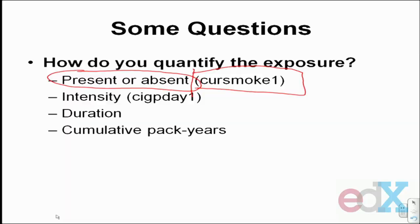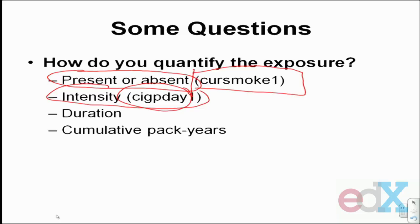For that, we have another variable in your data set called 'cigpday1', which is the actual number of cigarettes. That might be a better exposure to use, especially if you expect some sort of what we refer to as a dose-response relationship.